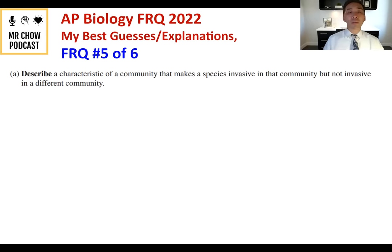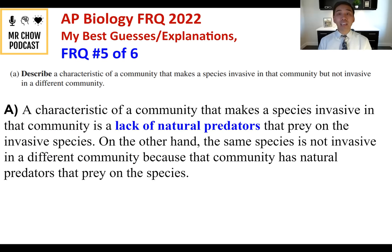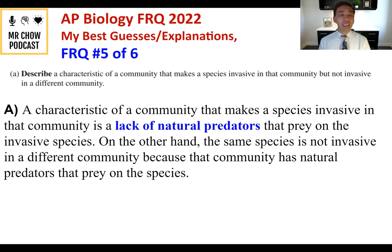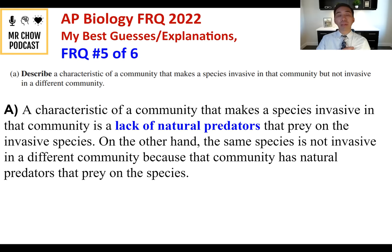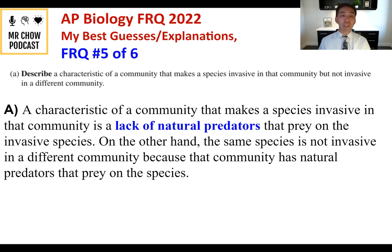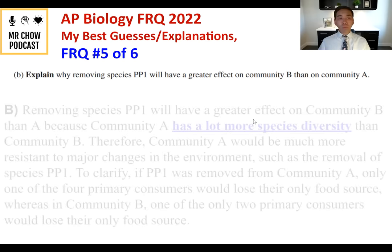Question 5A: Describe a characteristic of a community that makes a species invasive in that community but not in a different community. A characteristic that makes a species invasive is a lack of natural predators. If there are no natural predators, the invasive species can grow unchecked. In a different community, the same species is not invasive because that community has natural predators that prey on it.